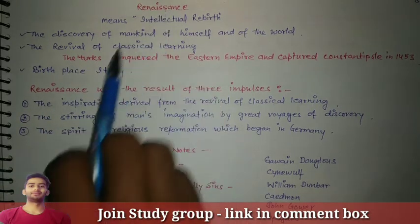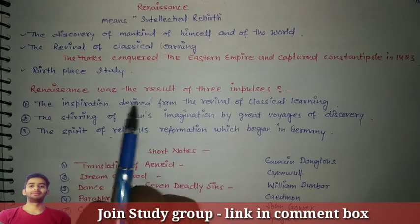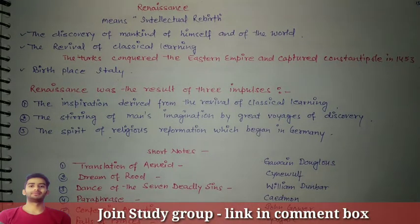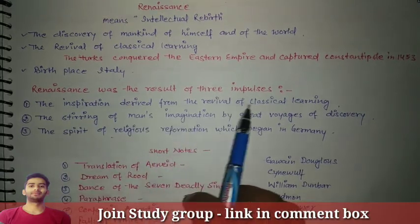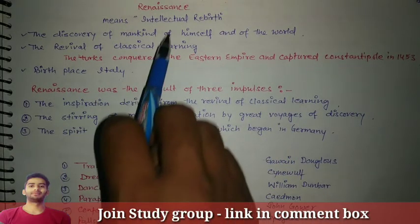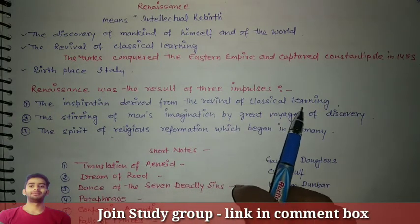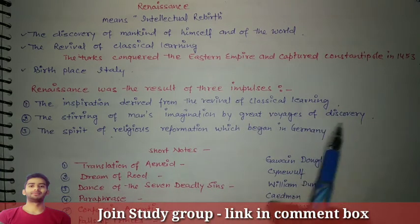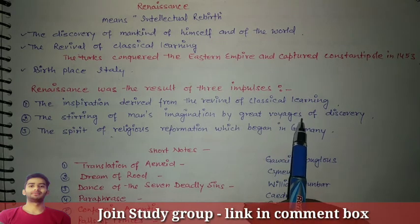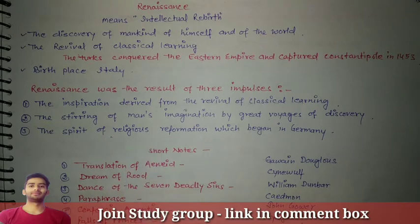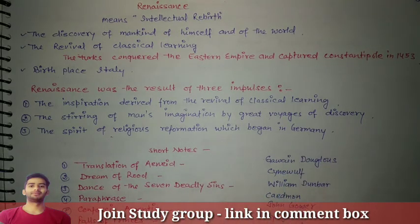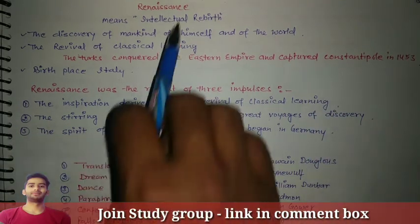The birthplace of the Renaissance is Italy. The Renaissance was the result of three impulses, which is important to understand if you are studying English literature. First, the inspiration derived from the revival of classical learning. Second, the stirring of man's imagination by great voyages of discovery — there were discoveries that led to new knowledge and thus intellectual rebirth. Third, the spirit of religious reformation, which began in Germany. These are the three things which caused the Renaissance.